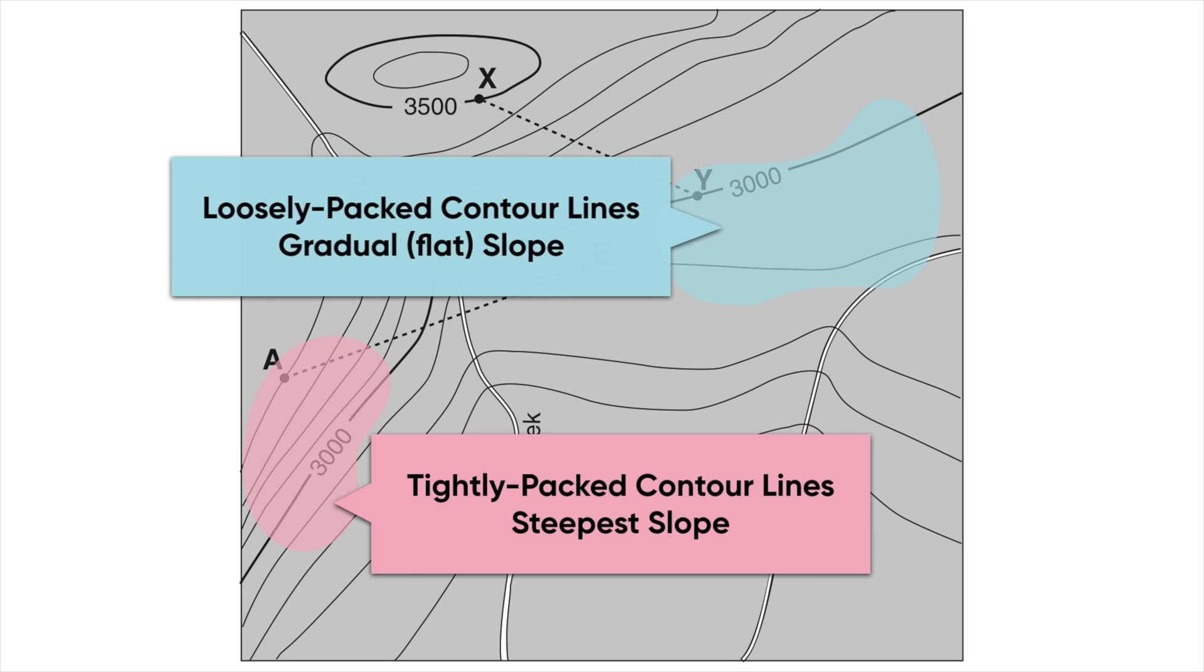Whereas a flatter area might be this spot shown in blue, this is where the lines are a little bit more spread out. So just to sum up, the closer together the contour lines, the steeper the slope is going to be.